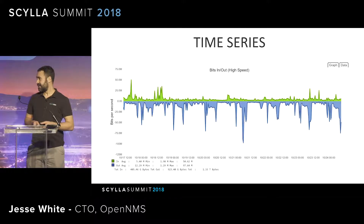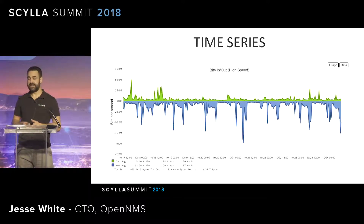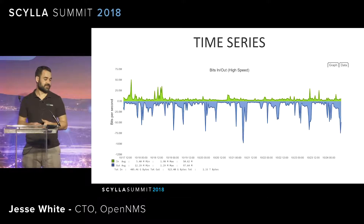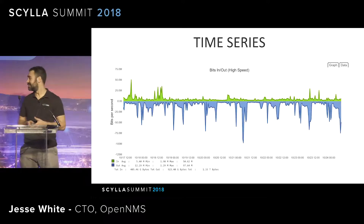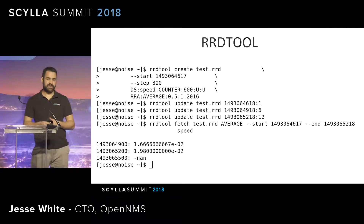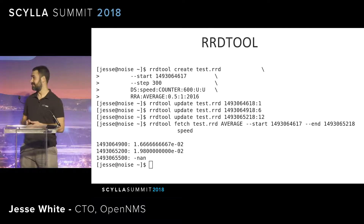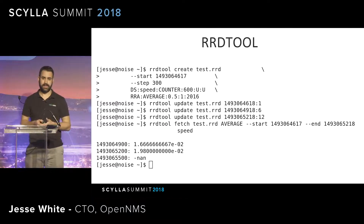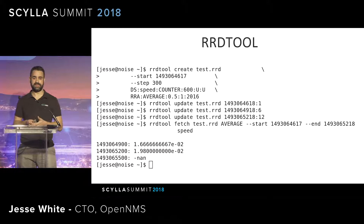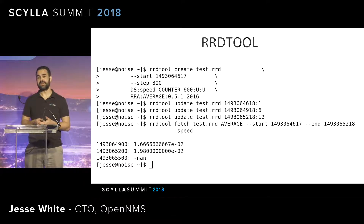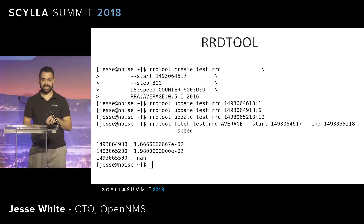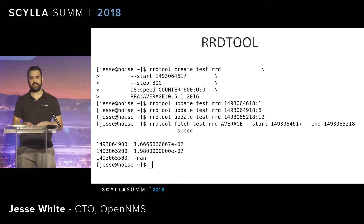Here's a graph of data in OpenNMS — what we're looking at here are the bits in and out on a particular network interface over a 12-hour period. This functionality has actually been in OpenNMS since around 2001 when it was originally added. Before using Newts and having a scalable solution, we used to use RRDTool — a set of utilities for time series storage and graphing that stores metrics in binary files on disk of a fixed size, with all storage allocated when you create the RRD file.